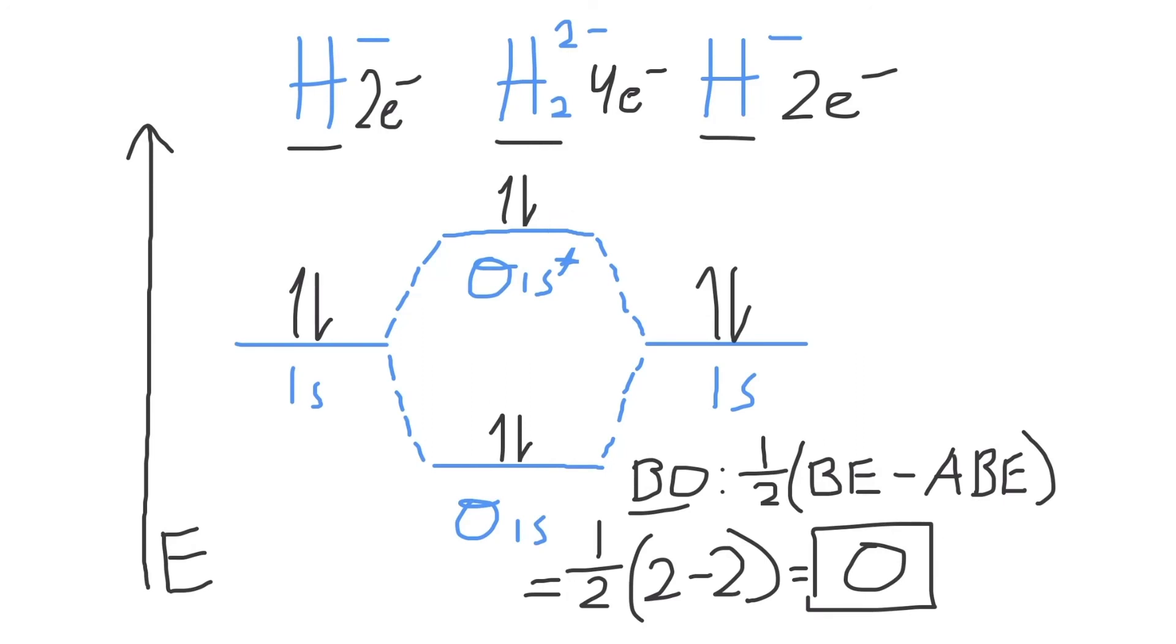A bond order of 0 tells you that there is no bond that exists between the hydrogen atoms, and that there are no electron pairs present in order to form a bond in the H2 2- molecule. Therefore, H2 2- cannot exist. That's it for this video, thanks for watching.